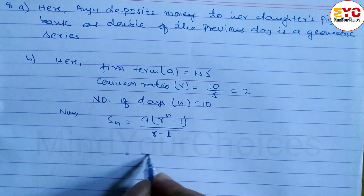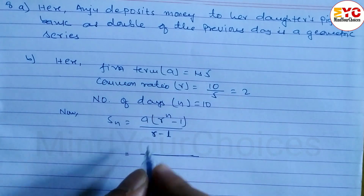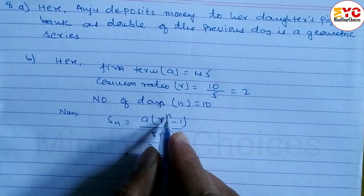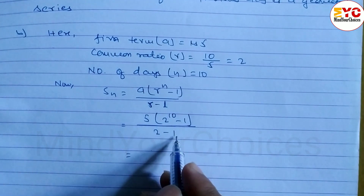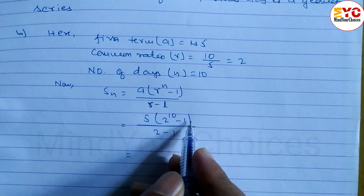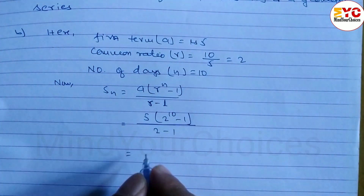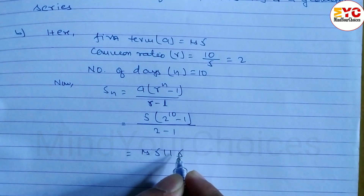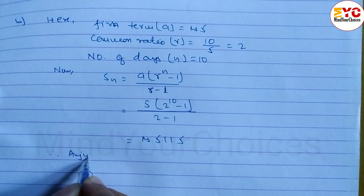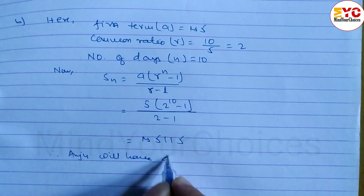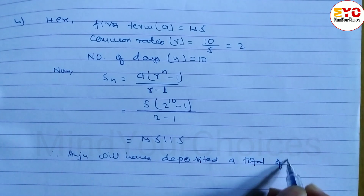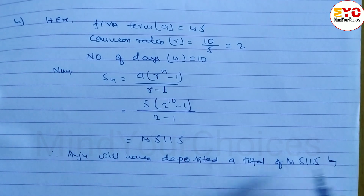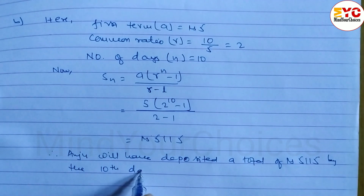To find how much is deposited in the piggy bank over 10 days, we calculate the sum: a equals 5, R equals 2, so S10 = 5 × (2^10 − 1) / (2 − 1). This gives 5 × (1024 − 1) / 1 = 5 × 1023 = 5,115 rupees. Therefore, Anju will have deposited a total of 5,115 rupees in 10 days.